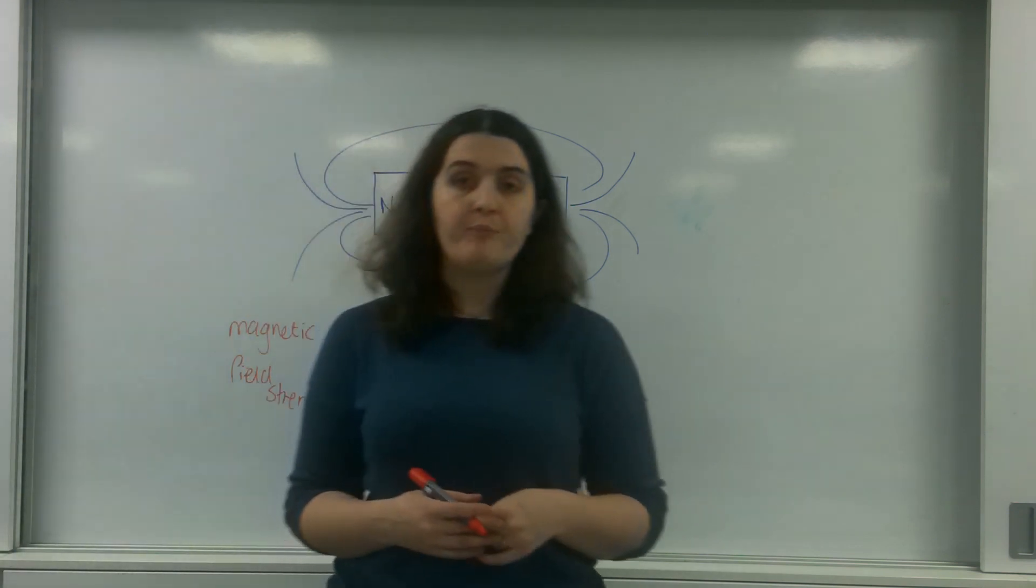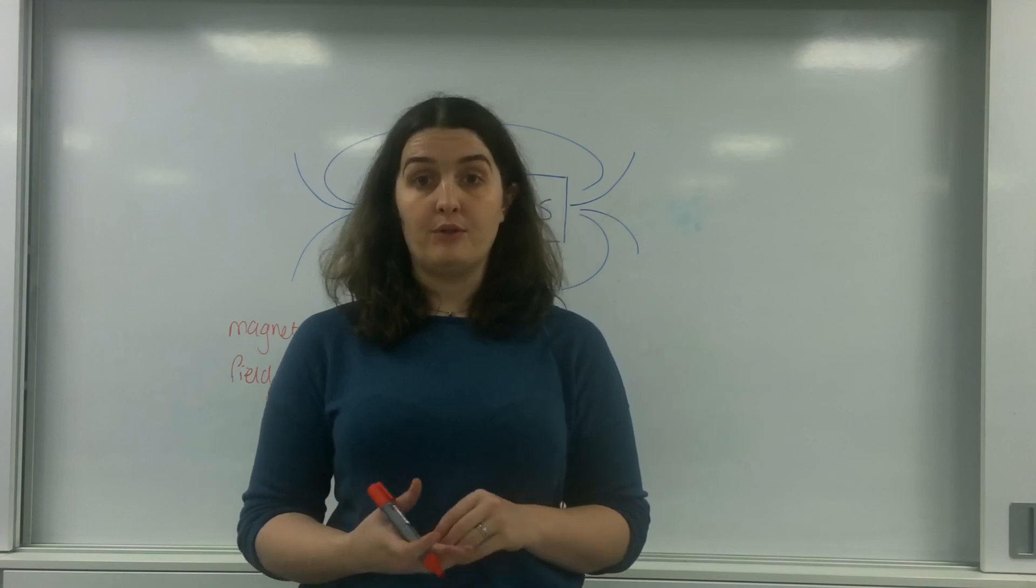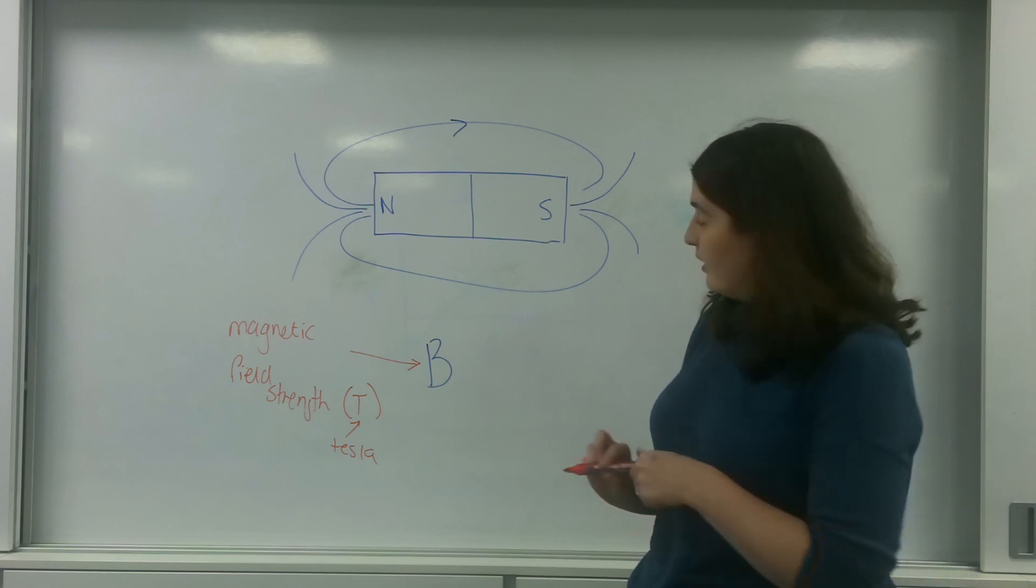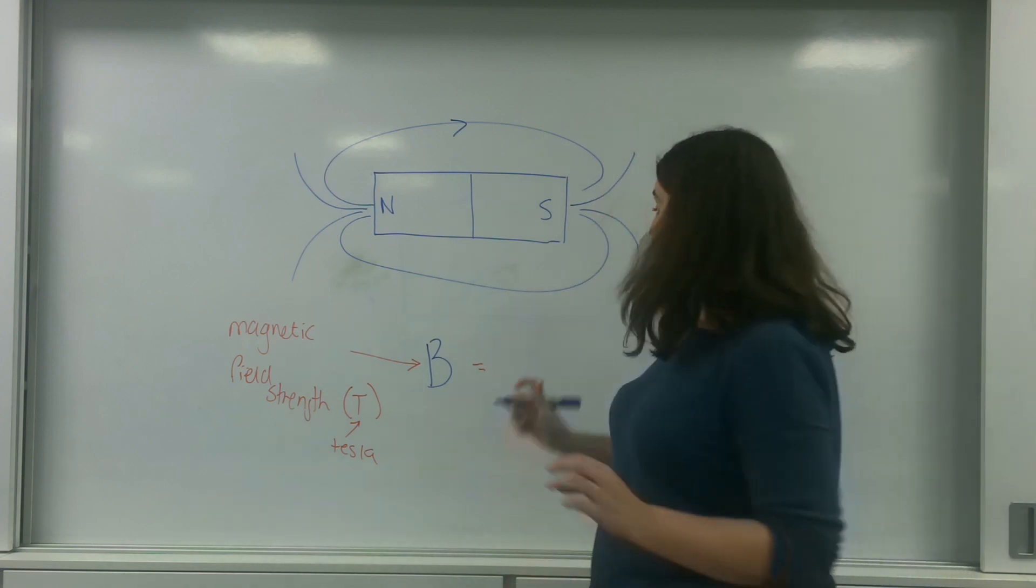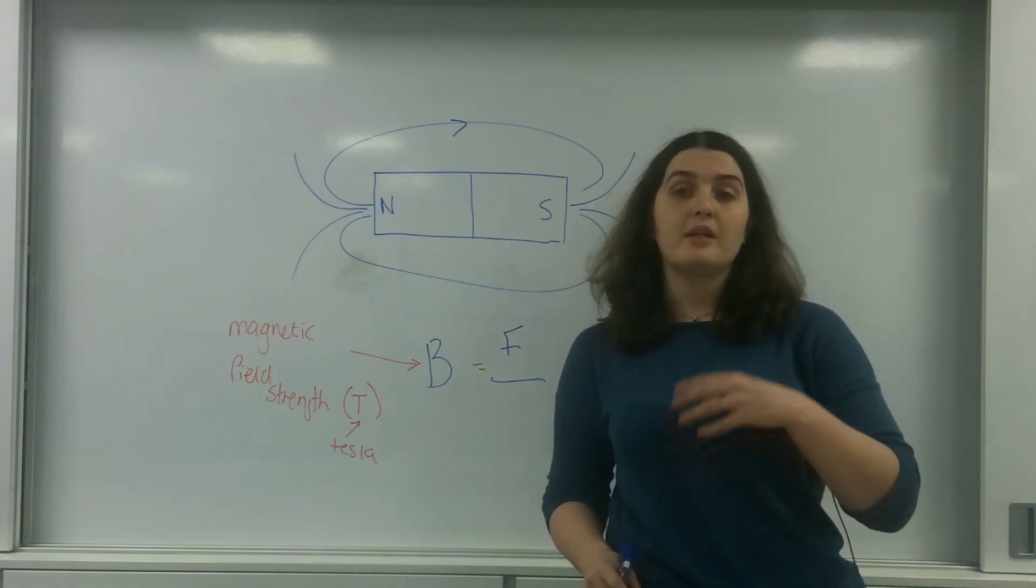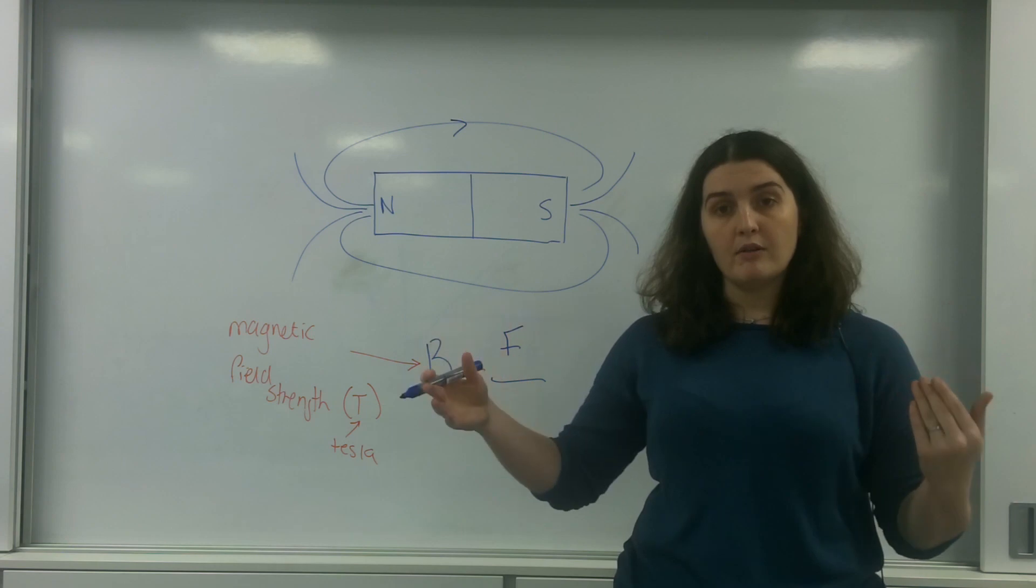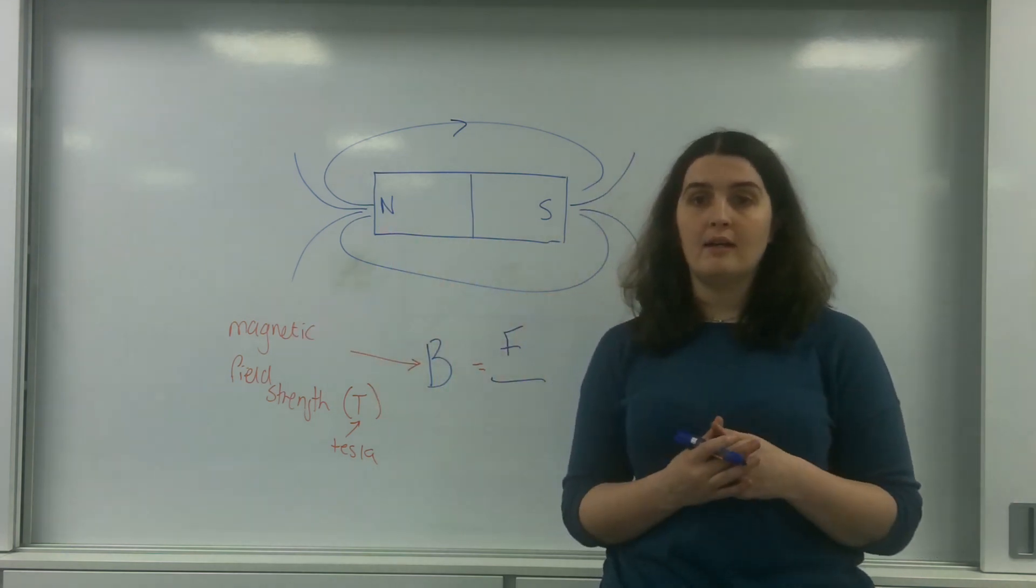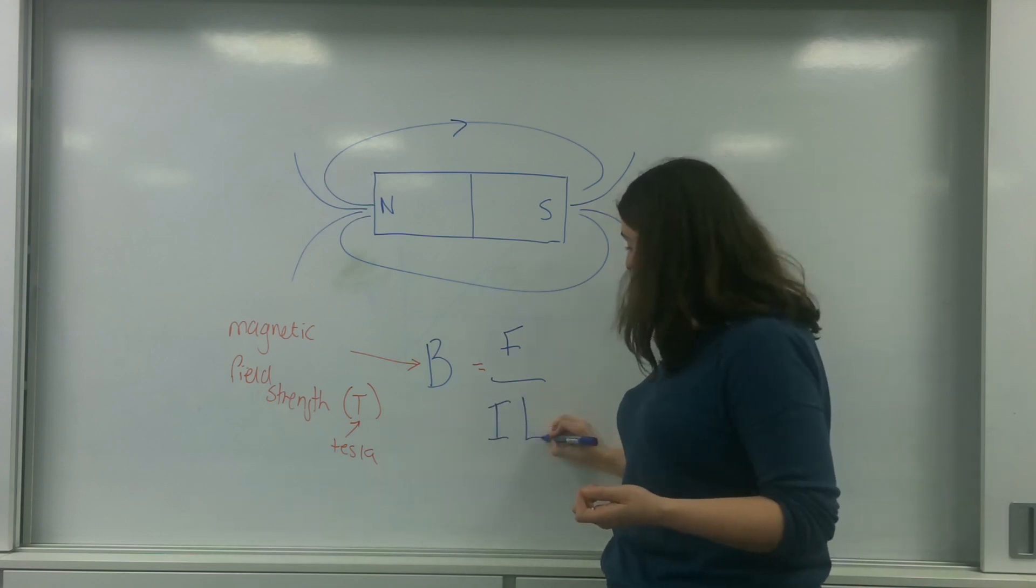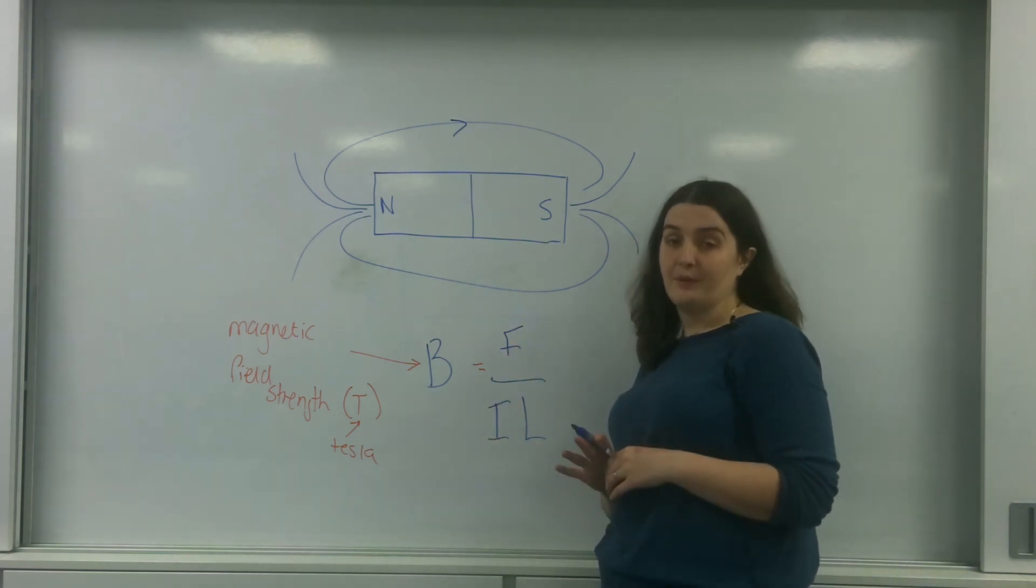And like I said before, field strength is the relationship or the ratio of force and the object that is affected by the field. So in a magnetic field, that is going to be force over... Now the thing that is affected by the field is a moving charge. And another way we can represent that, a moving charge, is current moving along a length of wire. So this is the letter for the current, I, times by L. So this here is the definition of the magnetic field strength.